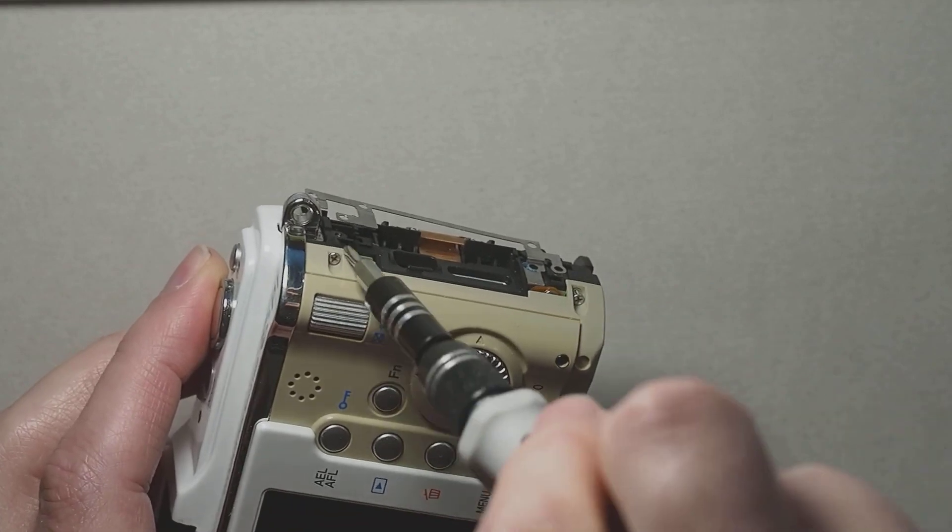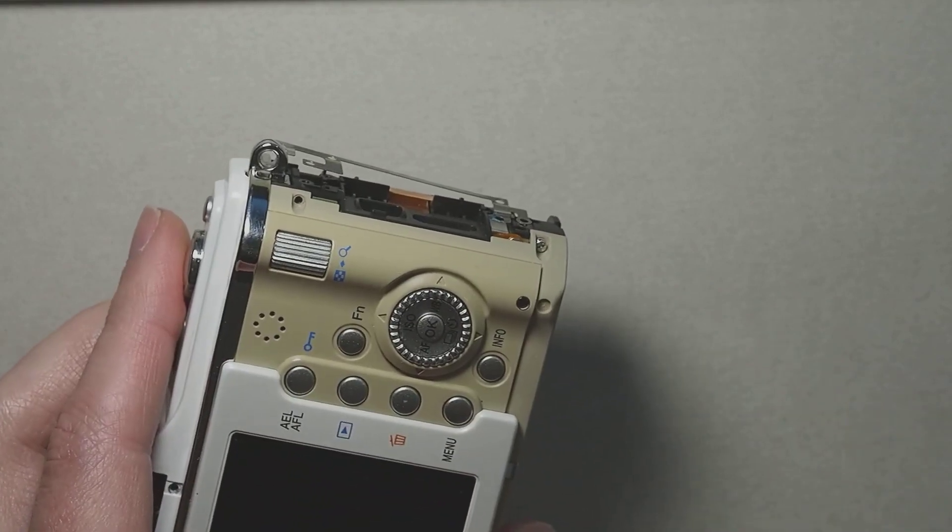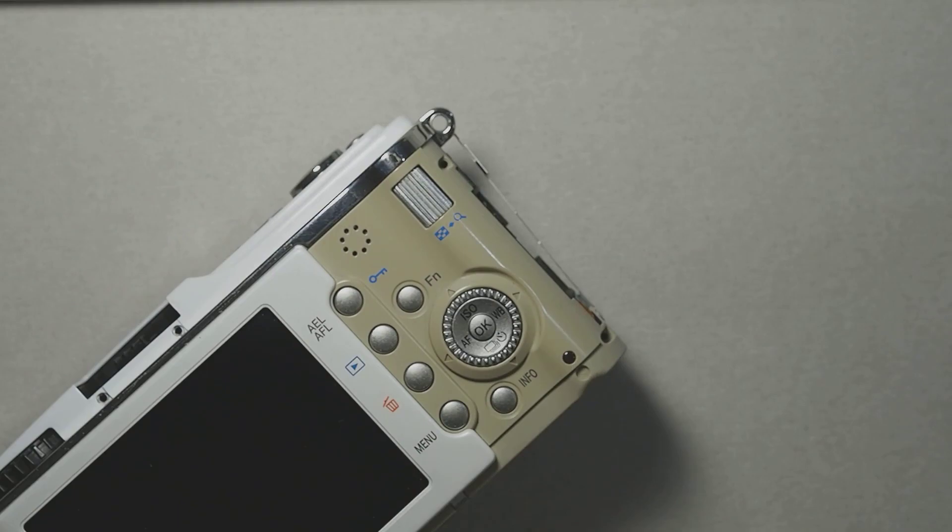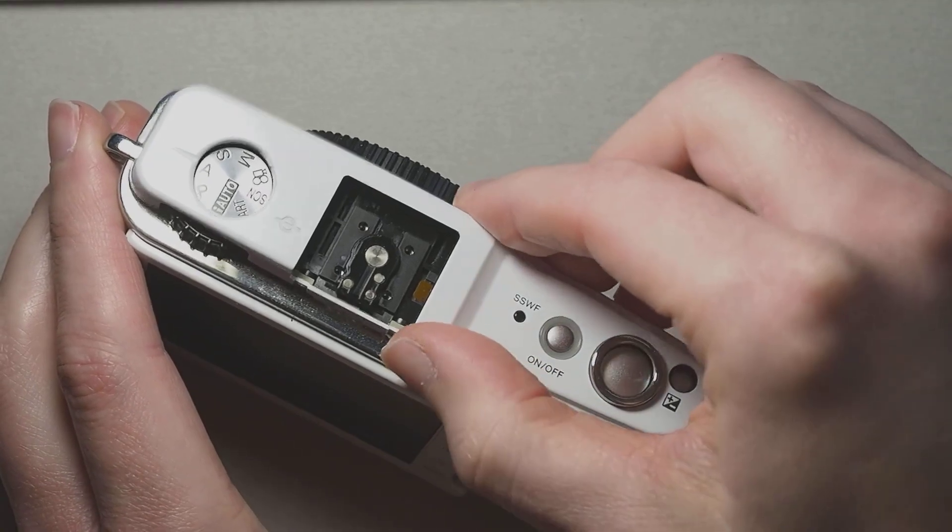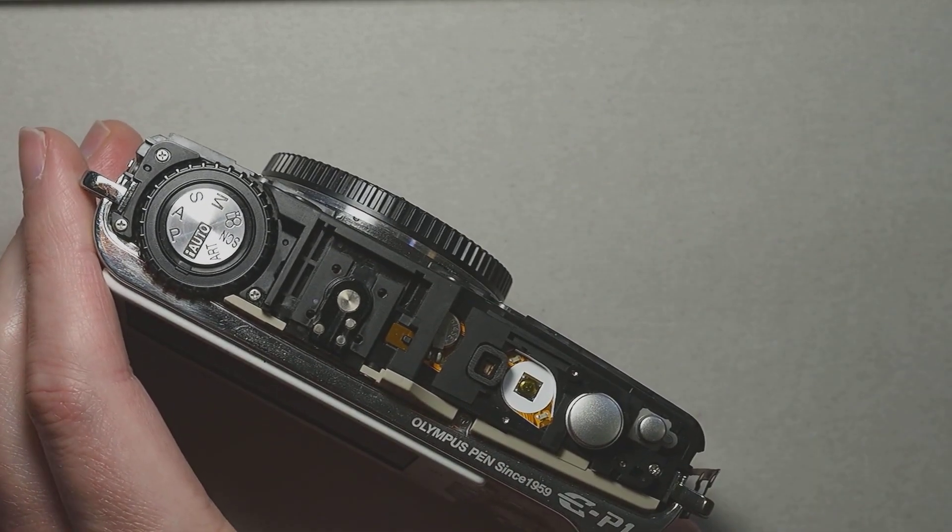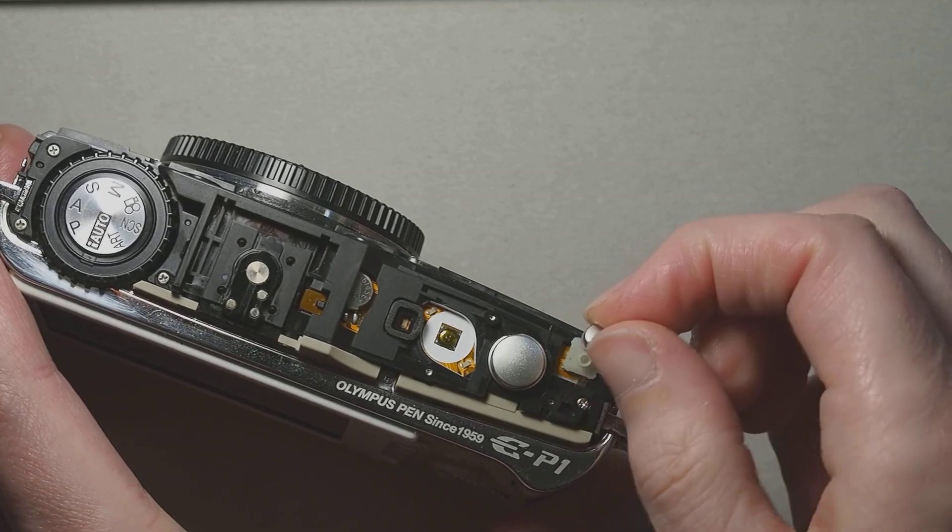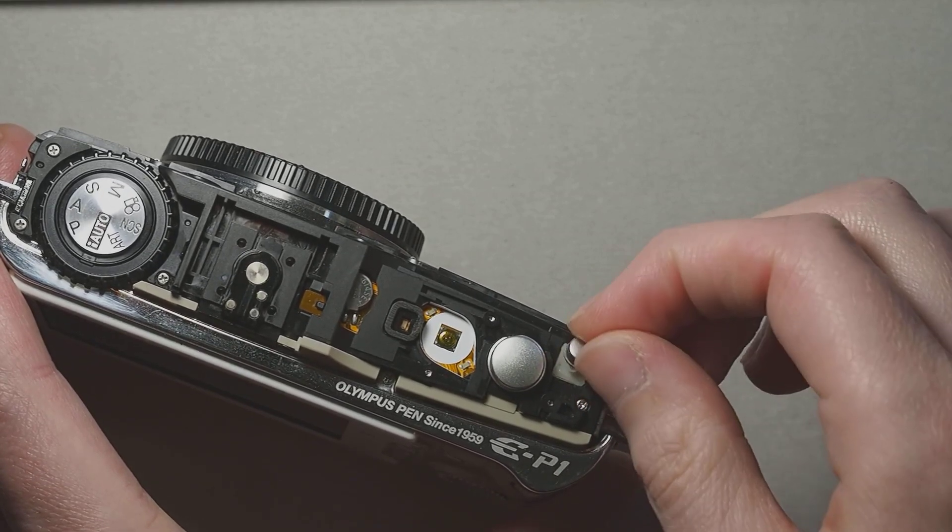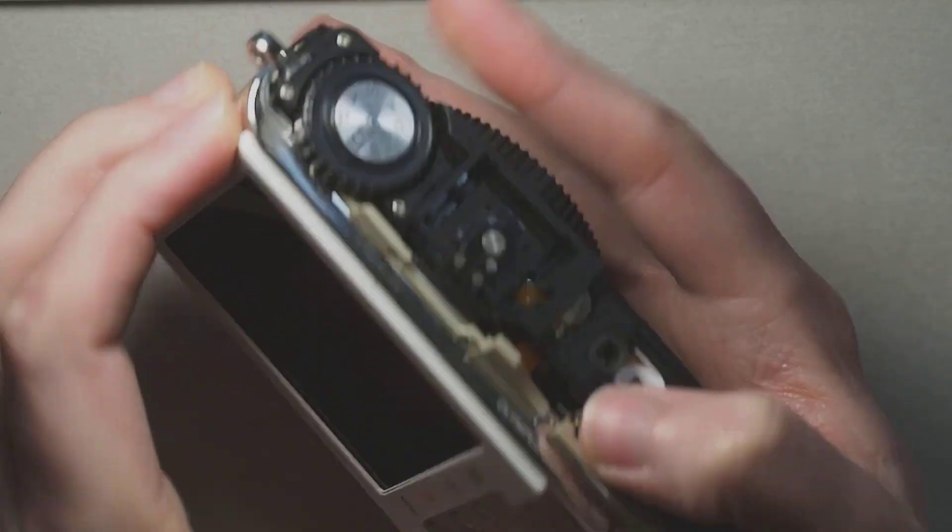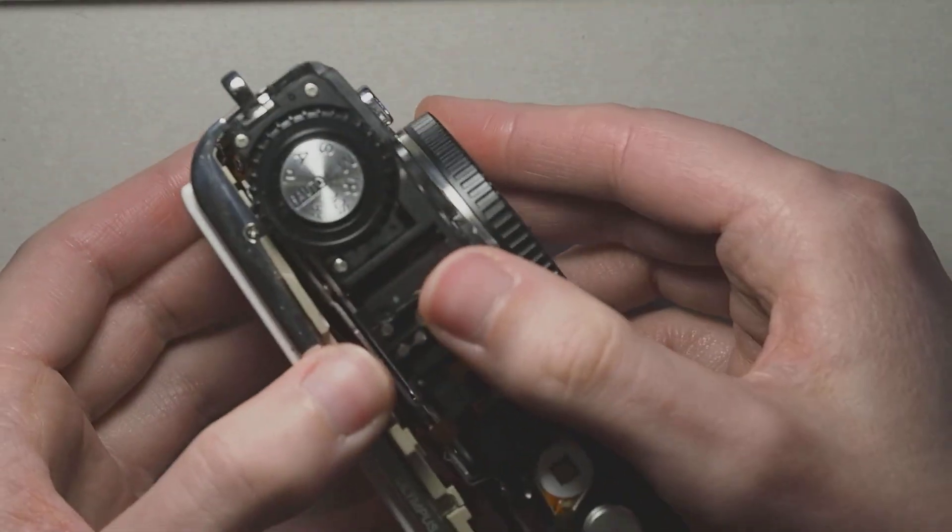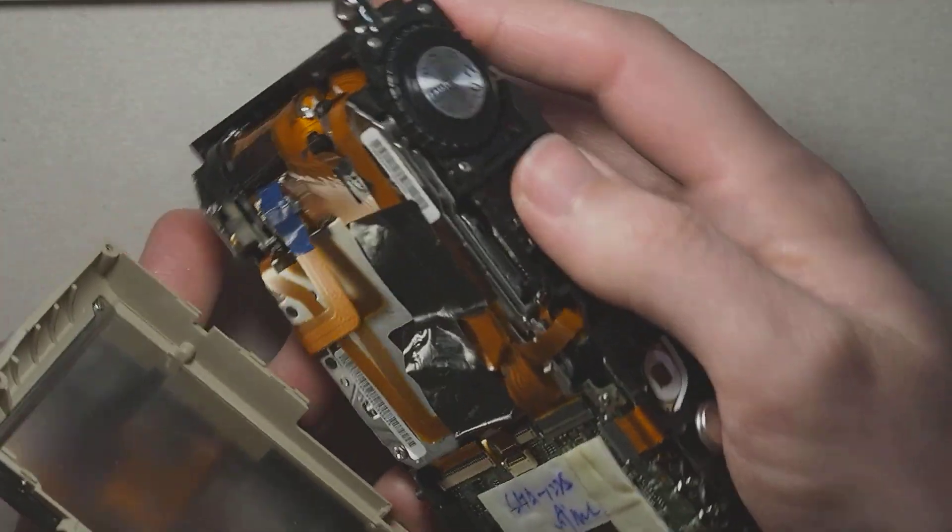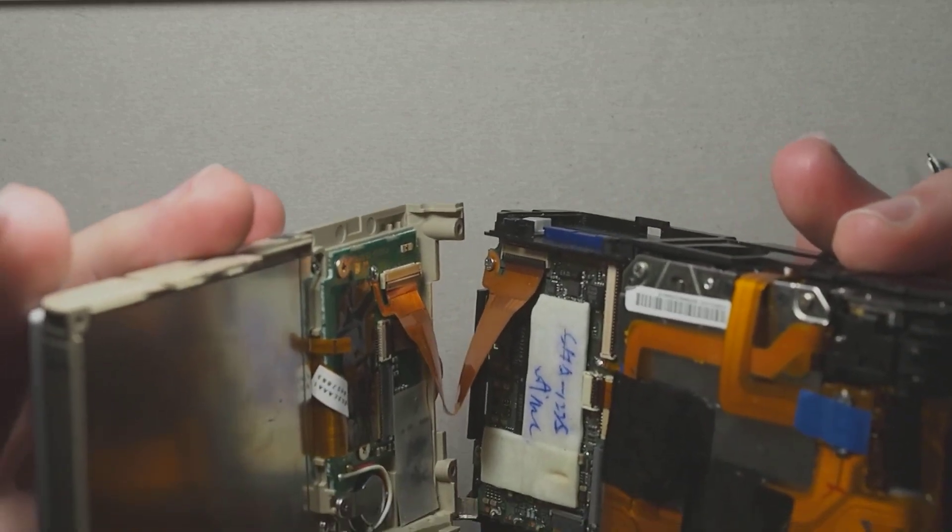Now just two more screws on the right of the display panel and the top cover comes off. Also take out the exposure adjustment button and the silicon base that it sits on. Now the entire back panel comes loose but it's still attached with a flat cable connector and one screw.